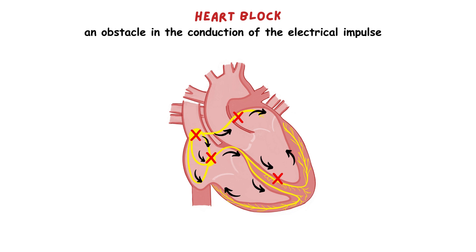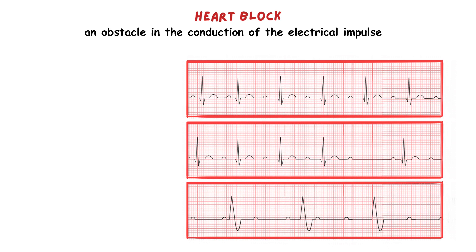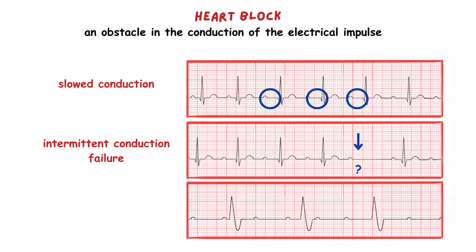A heart block can occur anywhere in the electrical conduction system of the heart, starting at the SA node, then at the atrial conducting pathways, then at the AV junction, the bundle branches and their subdivisions. The presence of heart block can result in either slowed conduction, intermittent conduction failure, or complete conduction failure.